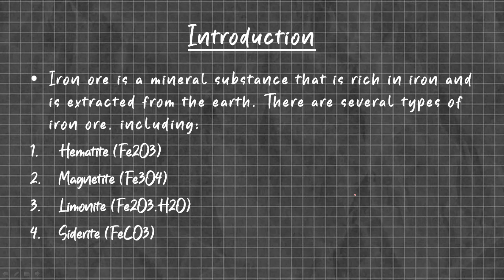The first one is hematite, second one is magnetite, third is limonite, and fourth is siderite. These are the four types of iron ore.